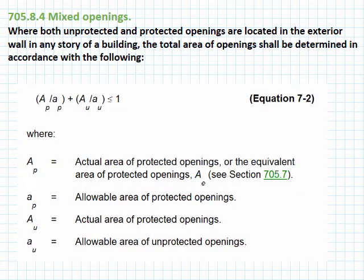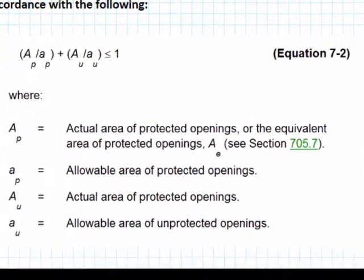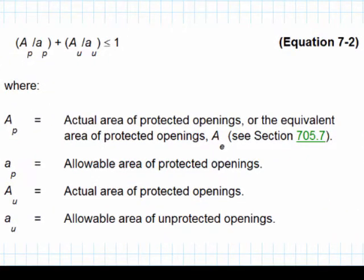Where an exterior wall on any story has both protected and unprotected openings, the unity formula as set forth in Section 705.8.4 determines the maximum areas of the openings. The simple explanation of Equation 7-2 is that if a percentage of the protected openings is utilized on an exterior wall of a story, then the remaining percentage is the total area permitted for unprotected openings.